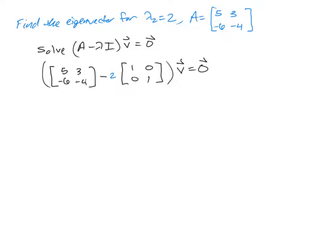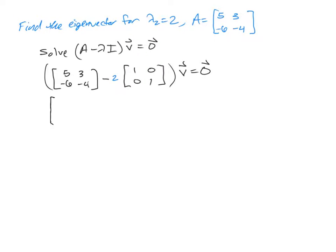And you'll notice that this has the result of subtracting 2 off of the main diagonal. So we're actually going to be solving, and we're going to have our 5 minus 2, of course, giving us a 3. And then we have the original 3 that's in this location here. We have the original negative 6 in this spot here. And then negative 4, take away 2 more, is going to give us a negative 6 for this entry of the matrix. And again, that's times V equal to the 0 vector.